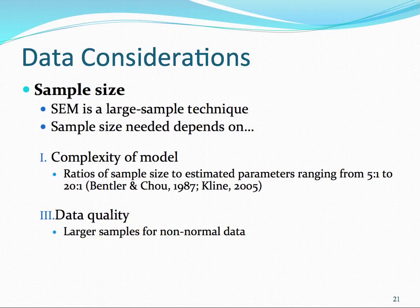However, he states that a more realistic target is a 10 to 1 ratio. So if you had a path model with 20 parameters to estimate, you would need a minimum sample size of 200 cases. That is one thing we must consider: the complexity of our model.